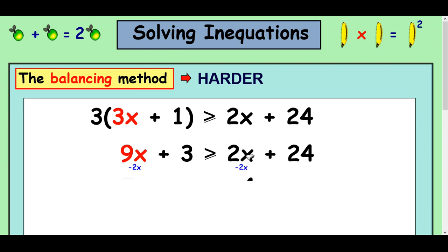You can see here I'm going to focus on the 2x. There are other ways to do it, but I'm going to get rid of that 2x there and I'm going to take it off the 9x. You could take away the 3 first, absolutely, but this is the way I usually do it. That's going to leave us with 7x add 3. It's greater than or equal to 24.